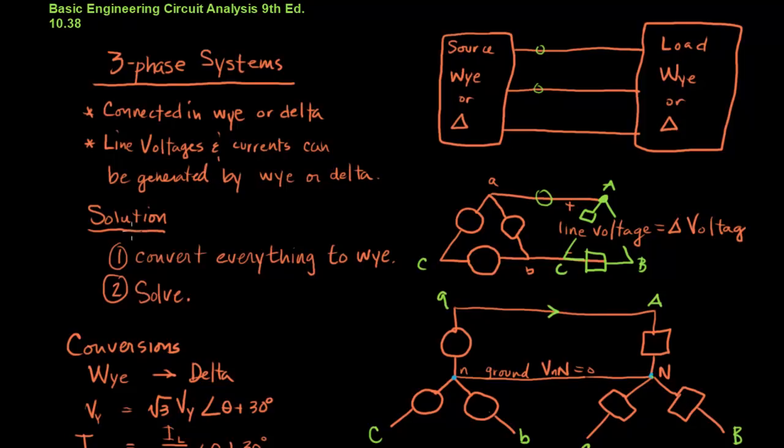Generally, what we want to do is convert everything into a Y and then solve it. And here's why. If you take a delta network and try and take a look at it, you'll notice that nodal analysis is really complicated. Mesh analysis is also really complicated.